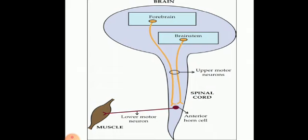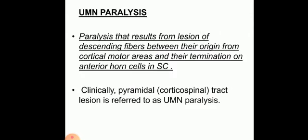Just to recollect: the extent of the upper motor neuron is from the brain — the forebrain or from the brain stem — continuing till the spinal cord. The extent of the lower motor neuron is from the anterior horn cells of the spinal cord to the muscles it innervates. Upper motor neuron paralysis is the paralysis that results from lesions of the descending fibers between their origin from the cortical motor areas and their termination on the anterior horn cells in the spinal cord.